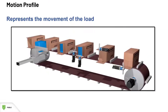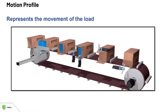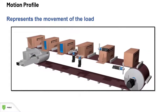What is a motion profile? A motion profile is the representation of the movement of the load. Here we have an example of a packaging machine that has a conveyor belt. We can see that the conveyor moves cyclically, moving the load forward in steps or indexes.